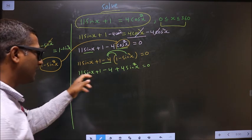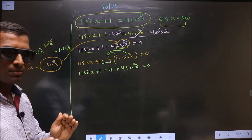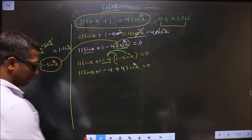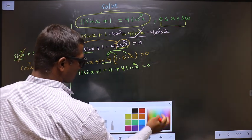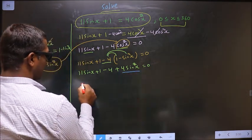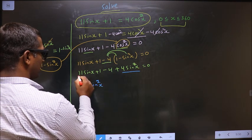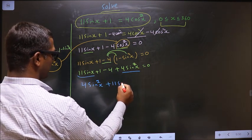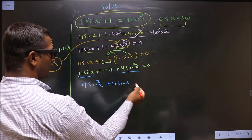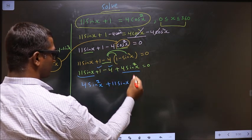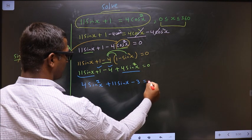Now, I rewrite this in proper quadratic form. What I mean is, first the square term I write, that is 4 sin square x. Now, the sin x thing, that is plus 11 sin x. Now, constants: plus 1 minus 4 will result in minus 3 equal to 0.